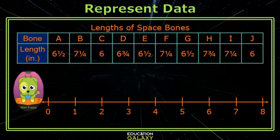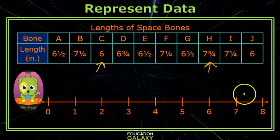You've made dot plots before, so we'll go kind of quick. If you look, my least value is 6, and my greatest value is 7 and 3 fourths. So I'm going to mark off fourths between 6 and 8.